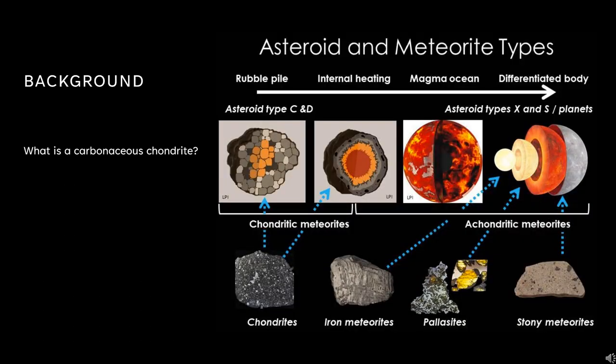For a bit of background, carbonaceous chondrites, or CCs, are a class of meteorites that are rich in organic material, including carbon and clay minerals. They are particularly interesting because they preserve evidence of early solar system organic chemistry and can therefore provide information on the chemical processes that may have kickstarted life on Earth.